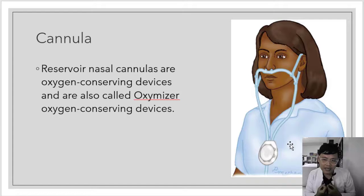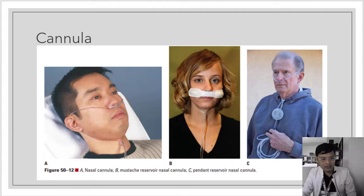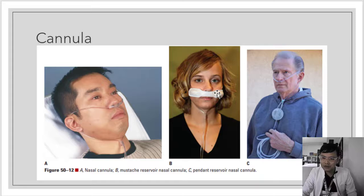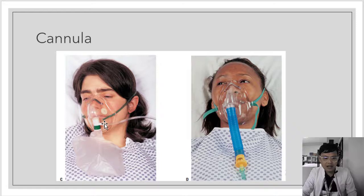Examples of cannulas include the standard nasal cannula, the mustache reservoir nasal cannula — which has a small cylinder for oxygen humidification — and the pendant reservoir nasal cannula. Both reservoir types are oxymizers. We also have the non-rebreather mask with a plastic reservoir, and the venturi mask, which is the high flow system device.